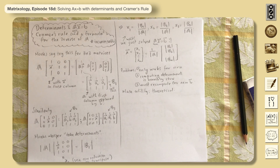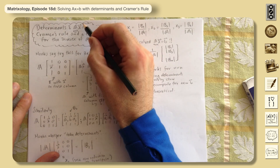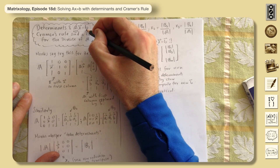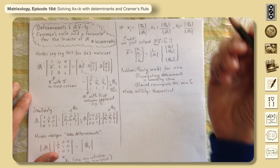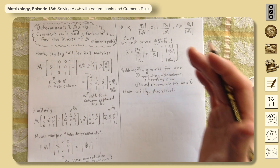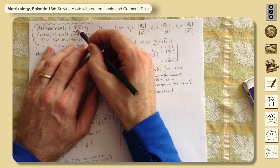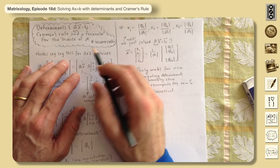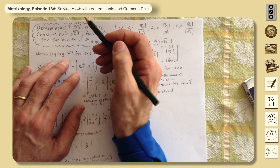We're covering Cramer's Rule and finding the inverse of A. We're back to solving Ax = b — we know b, we know A, and we're trying to find x. We're only working on n×n square matrices, and determinants are going to help us here.